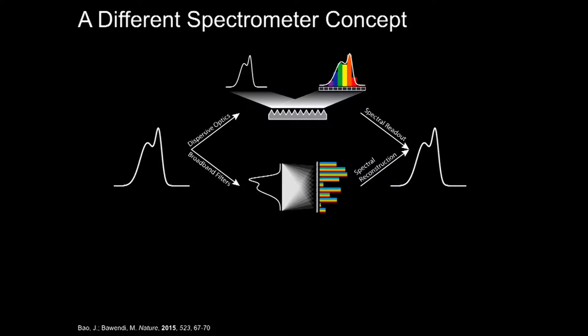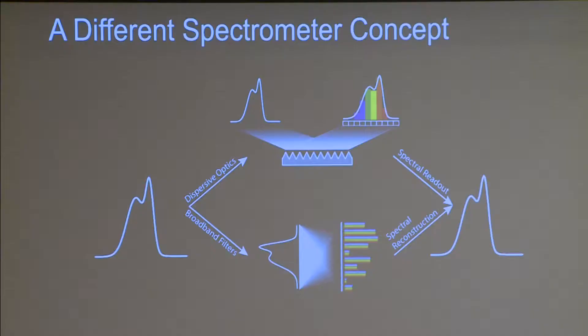Let me tell you a little bit about how this came about. When we think of a spectrometer, we think of taking light — a spectrum of light — running it through a grating or a prism, and spreading out the different colors on a sensor, an image sensor, a bunch of pixels or a CCD, and reading the intensity of each color in that pixel to recreate the spectrum.